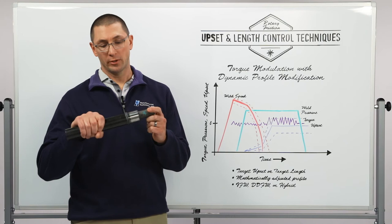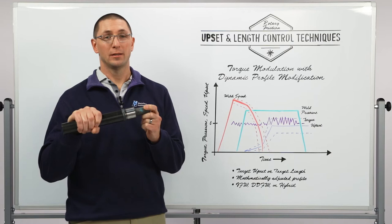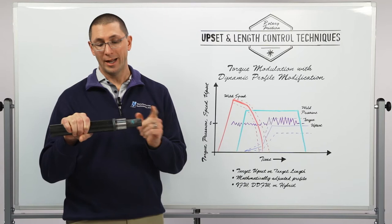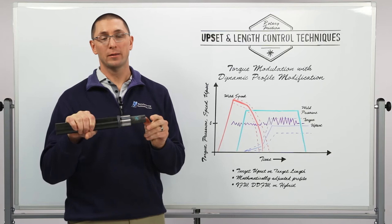For recent episodes we've been talking about upset control. We now want to apply this upset control technique to length control. So we need to do things a little bit differently because the incoming part lengths might vary. I can control upset using pressure modulation or torque modulation and I can get the same amount of upset from one weld to the next.